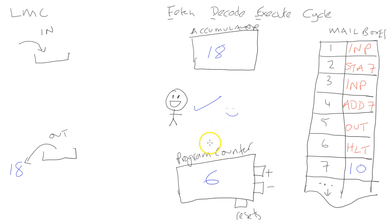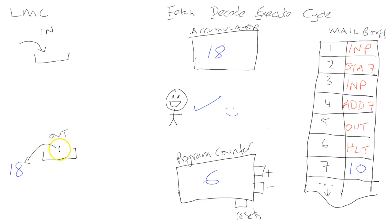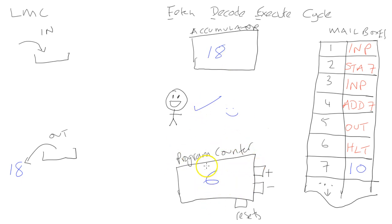That is the basic principle of how a computer works. Think of the in-tray as your input devices - could be like a keyboard, a mouse, a sensor of some kind. Think of the out-tray as the output devices - like sound or monitors or something like that. And this room is like the CPU. The accumulator is like the CPU doing the calculations, the number crunching. The program counter is basically a register - it allows you to control